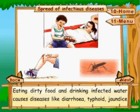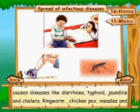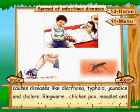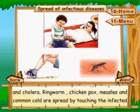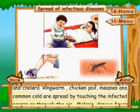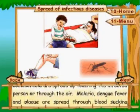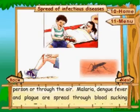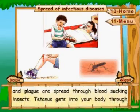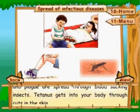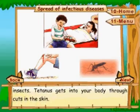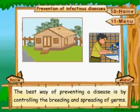Eating dirty food and drinking infected water causes diseases like diarrhea, typhoid, jaundice, and cholera. Ringworm, chickenpox, measles, and common cold are spread by touching an infected person or through the air. Malaria, dengue fever, and plague are spread through blood-sucking insects. Tetanus gets into your body through cuts in the skin.